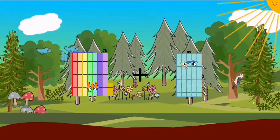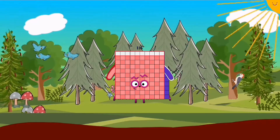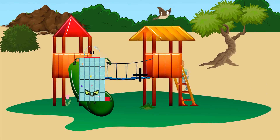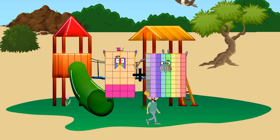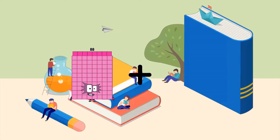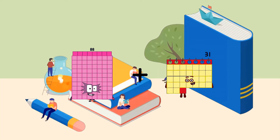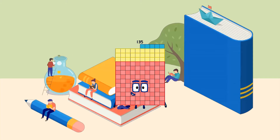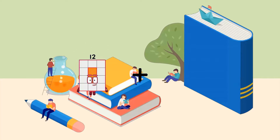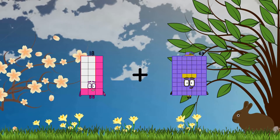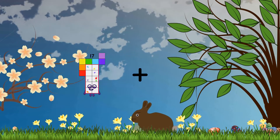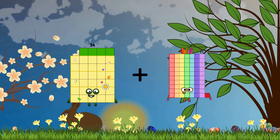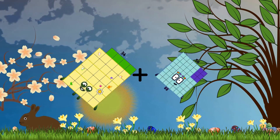43 plus 73 equals 116. 28 plus 79 equals 107. 88 plus 47 equals 135. 18 plus 71 equals 89. 34 plus 56 equals 90.